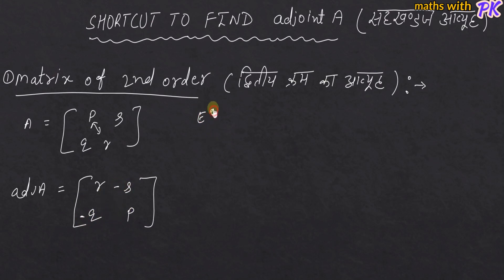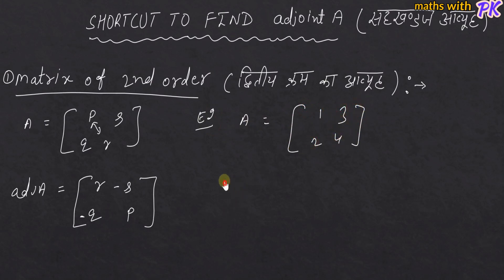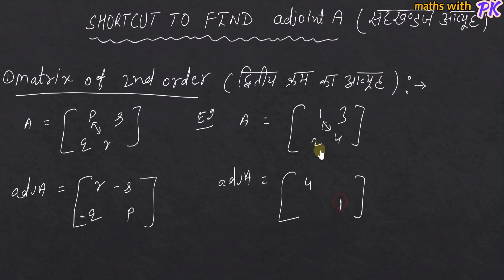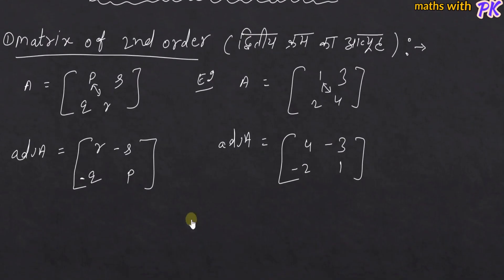Let's look at the example. Adjoint A is very easy. The principal diagonal elements are interchanged — 4 to 1 and 1 to 4. The off-diagonal elements change sign. And you know that Adjoint A is the most important part.